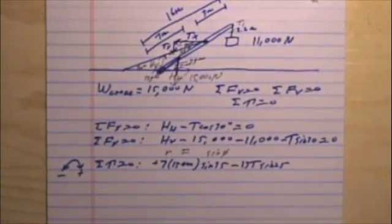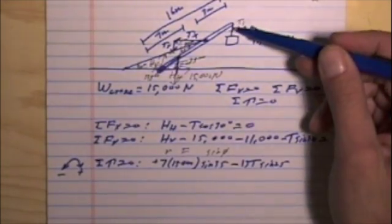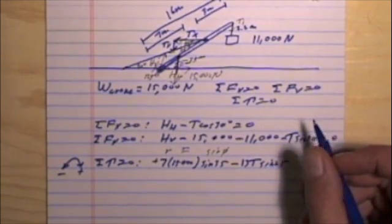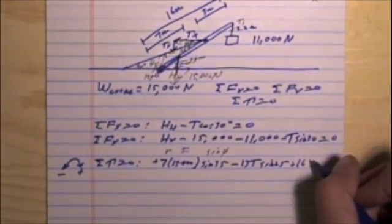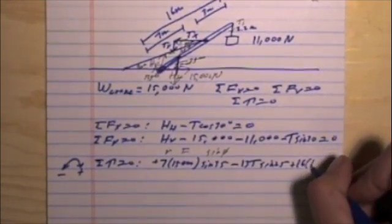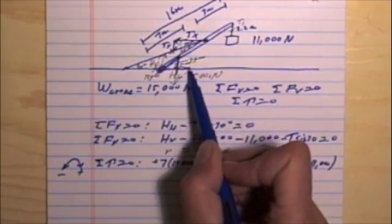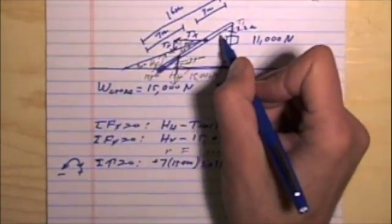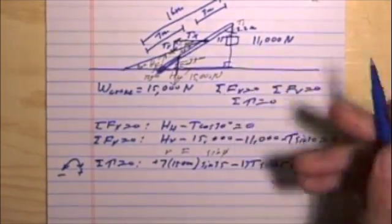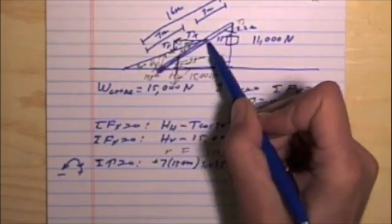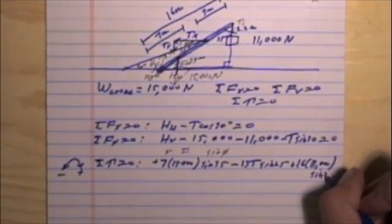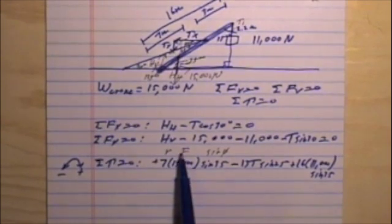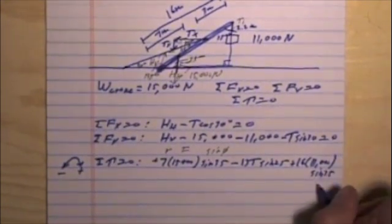The last force causing rotation is the tension T1 at the far end of the beam — 16 meters from the pivot — causing clockwise rotation. It has a magnitude of 11,000 newtons. The angle this force makes relative to the beam is 35 degrees, the same as for the weight, from a right triangle with 55 degrees and 90 degrees. So this torque is plus 16 times 11,000 times sine of 35 degrees. All torques sum to zero.